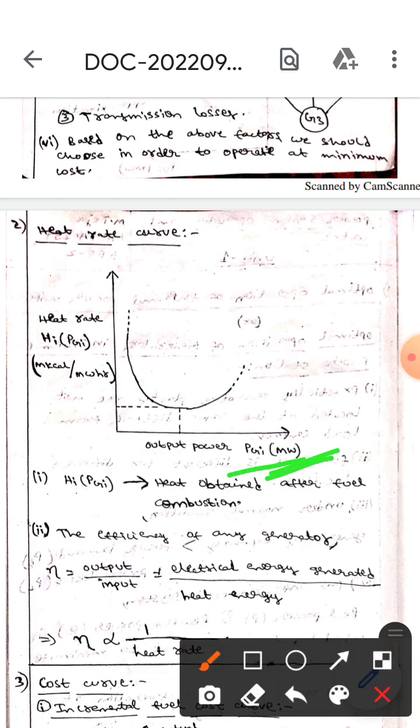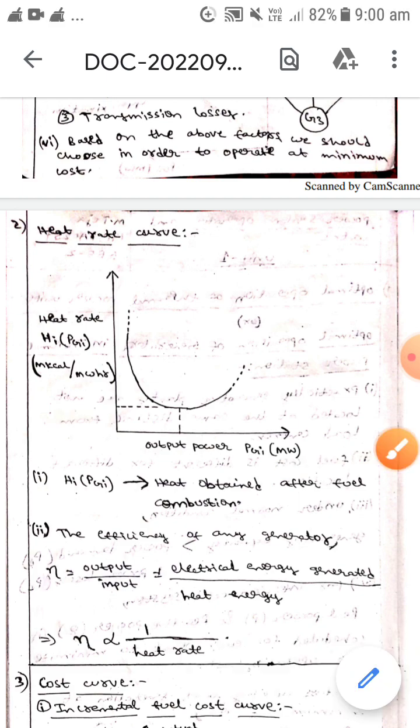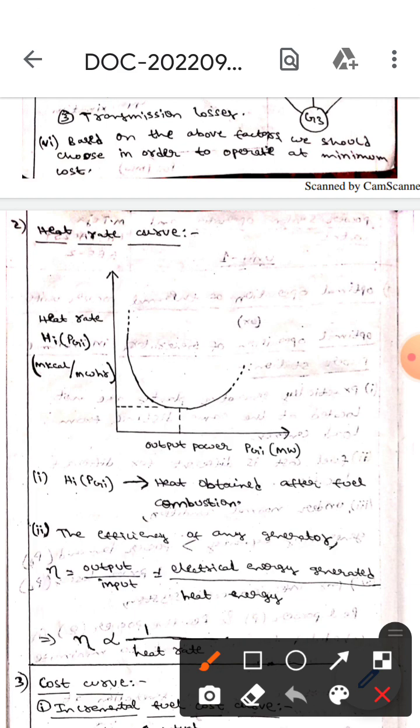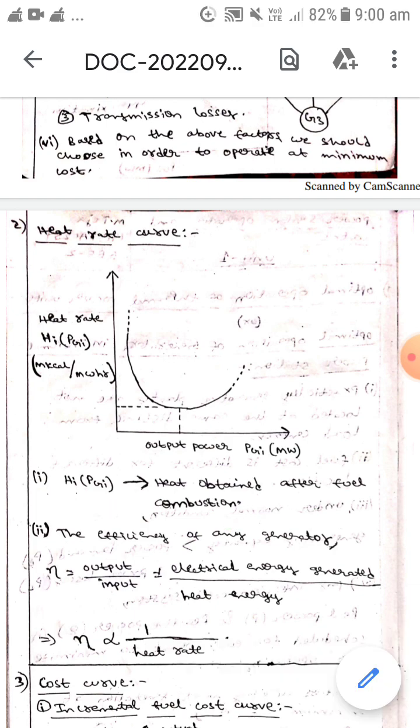take output power PCI, its units are megawatts. Whereas in the y-axis we take heat rate HA of PCI, its units are MKcal by MWhr. Here HA of PCI is the heat obtained after fuel combustion.